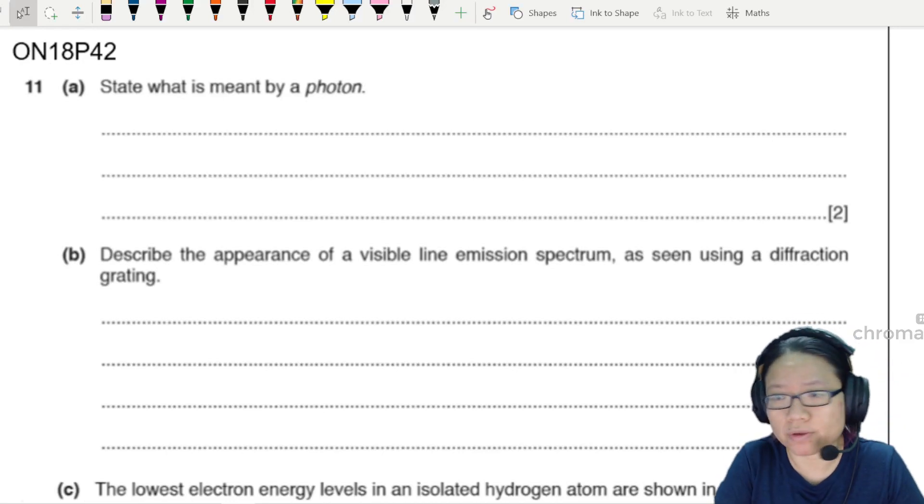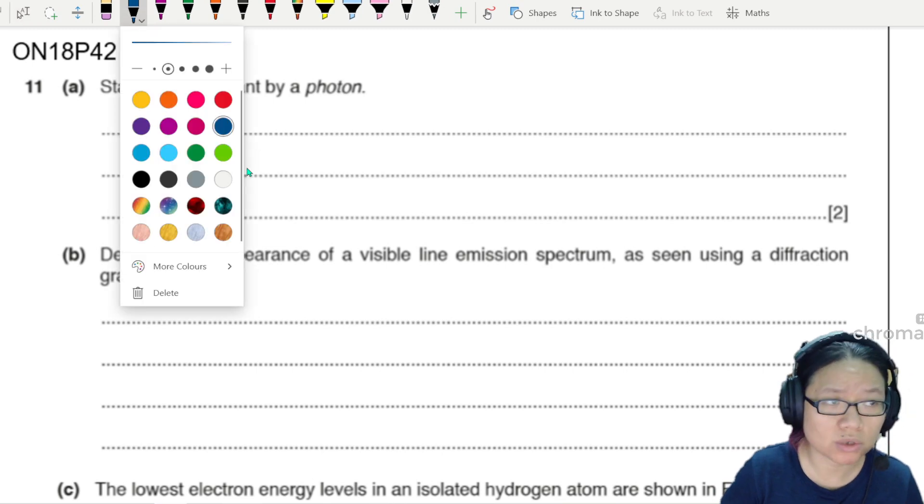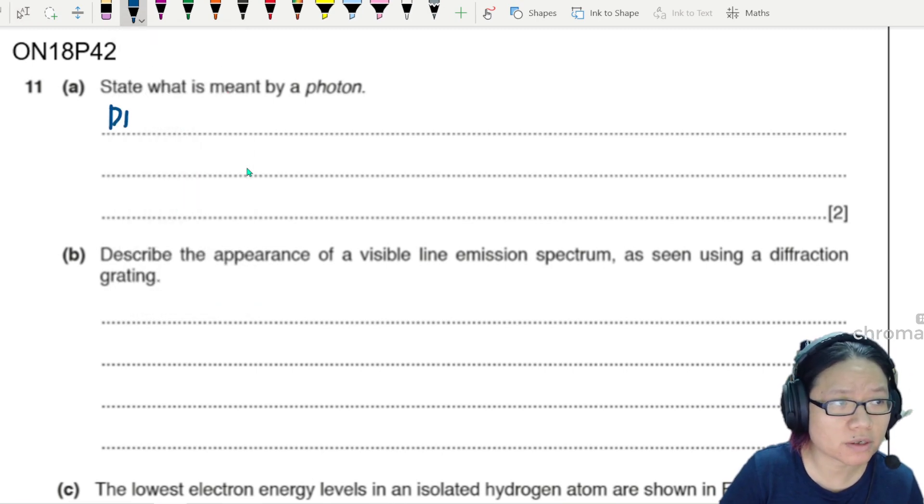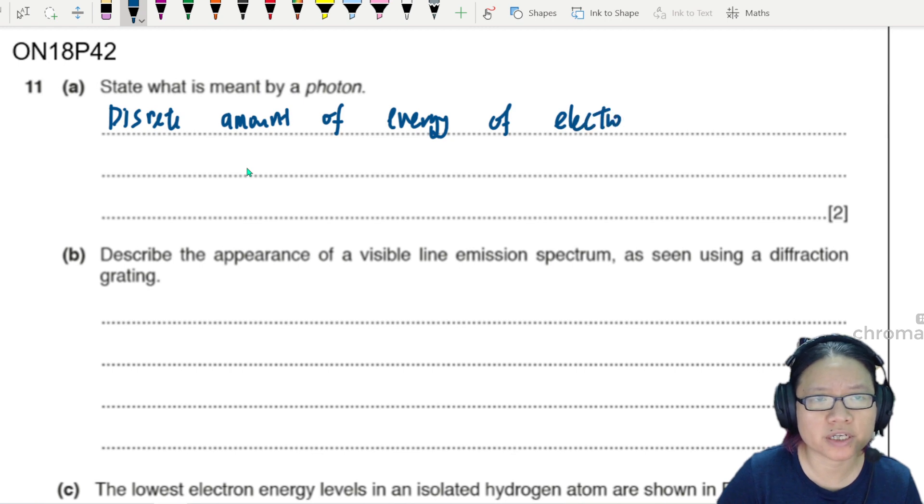State what is meant by a photon. This is the standard definition - remember to use keywords such as discrete, because it's discrete values. So this is discrete amount of energy of the electromagnetic radiation.